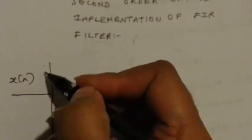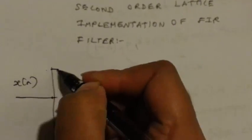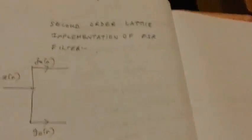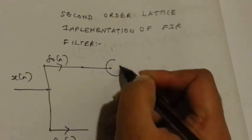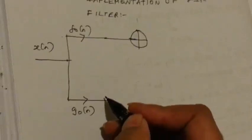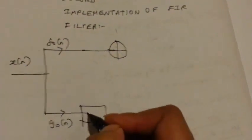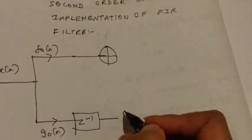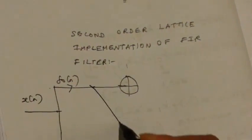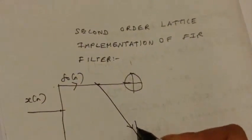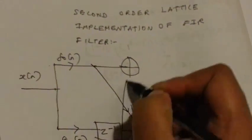X of N is the input. For the first section, this is F0 of N. F0 refers to section 1, and this is G0 of N. F0 of N and G0 of N denote the first section of the lattice. Now you have a delay element here, and then you have an adder. This is the first section. K1 is the reflection coefficient for the first section.